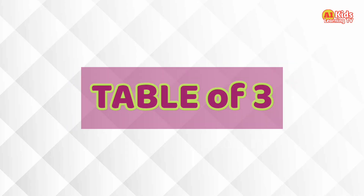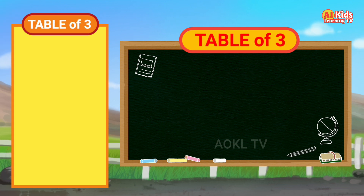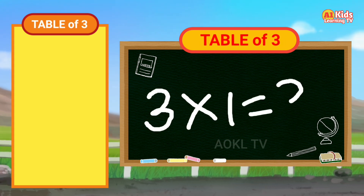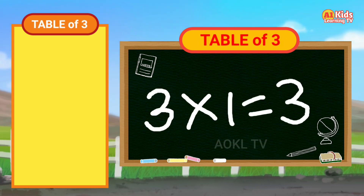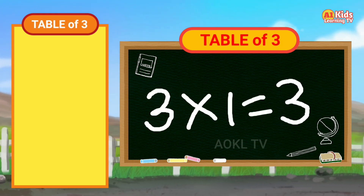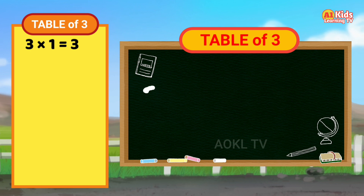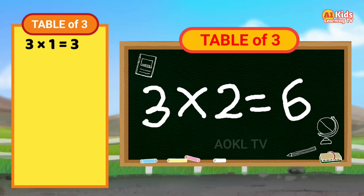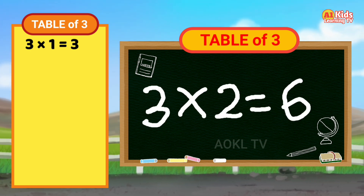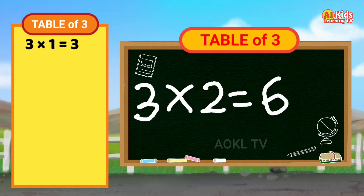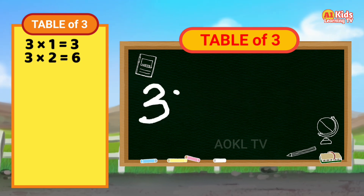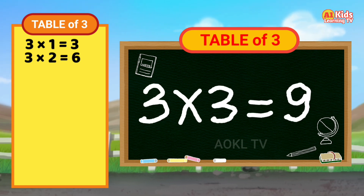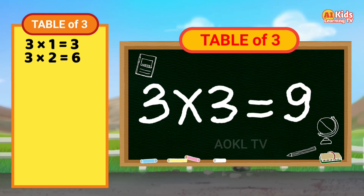Table of three. Three one's are three. Three two's are six. Three three's are nine.